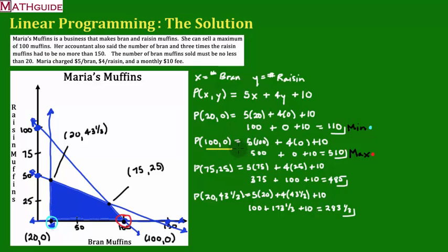on the whole, as it stands right now with the parameters we're looking at, clearly it is 100, zero, or 100 bran muffins, zero raisin muffins would be to maximize her profit.